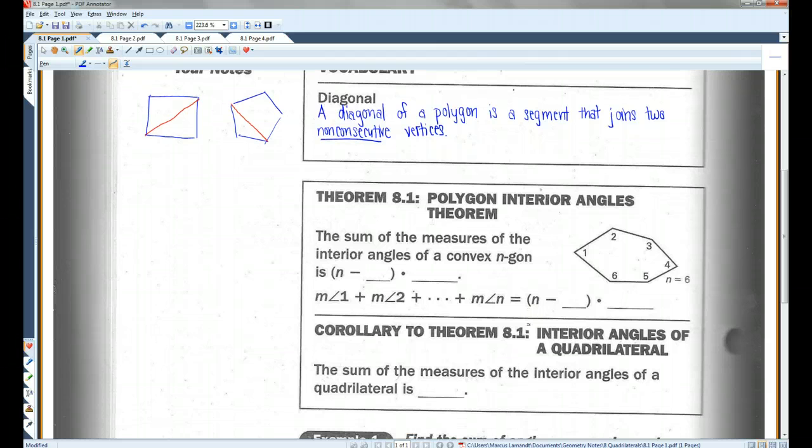All right, theorem 8.1, polygon interior angles. The sum of the measures of the interior angles of a convex, note that this is only for convex n-gons, is n minus 2 times 180. So if you were to add up all the angles inside any polygon, the sum would be the number of sides minus 2 times 180. And we'll do an example of that in a sec.